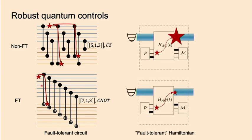For this talk, we need to consider some continuous evolution generated by a Hamiltonian. The task here is not about discrete circuits; instead, we really need to consider fault-tolerant Hamiltonians, still in the sense that small physical faults only propagate to small data errors.